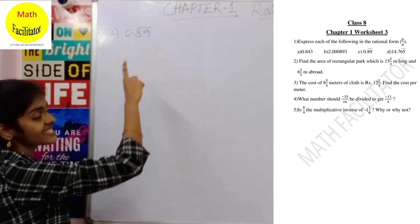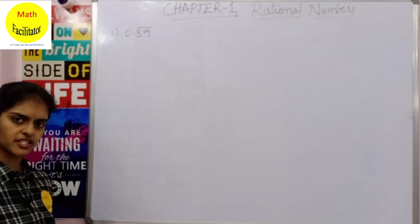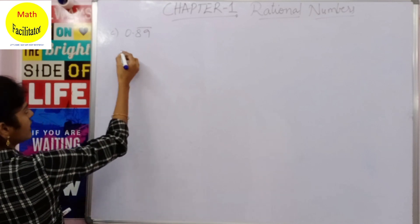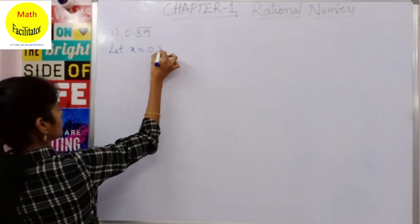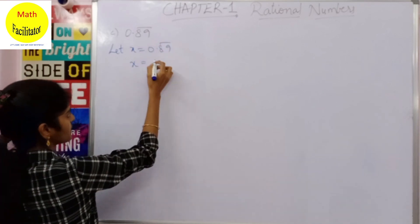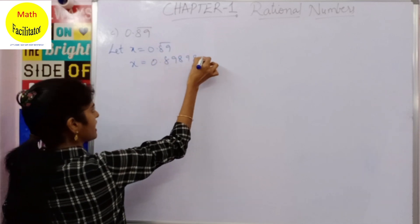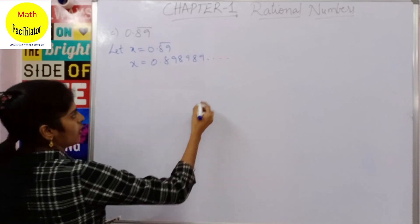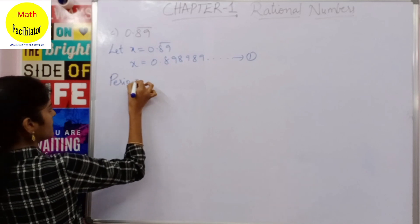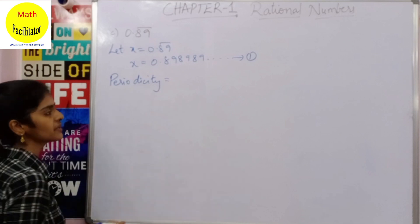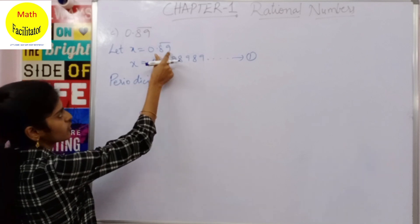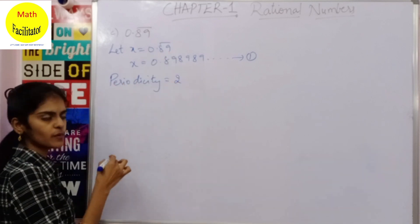The next question asks you to convert a non-terminating repeating decimal into rational form. The previous two problems were terminating, but this is non-terminating. Let x = 0.8̄9̄, meaning 89 is repeating — that is equation 1. Periodicity is how many digits are repeating; here two digits repeat, so periodicity is 2.